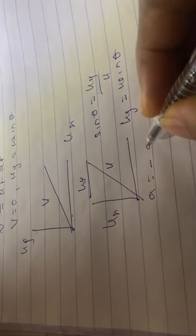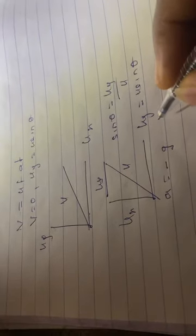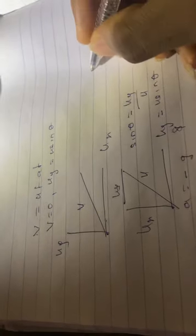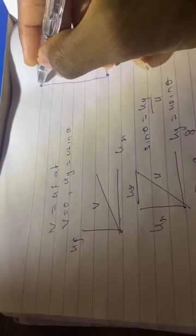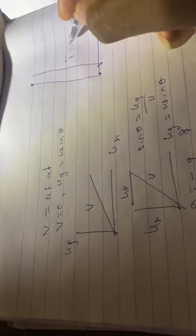Acceleration along this component when the object is thrown up is -g. The time of flight is the time it takes for the object to move up and down. When you throw an object from this point, it moves up to maximum height then comes down, so the time of flight is twice t.